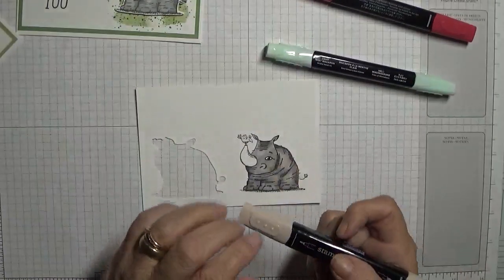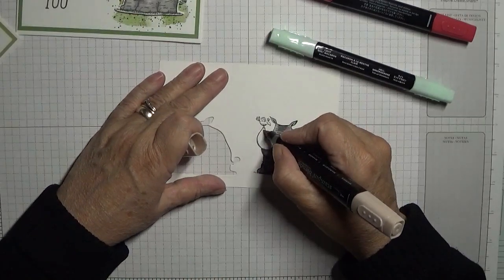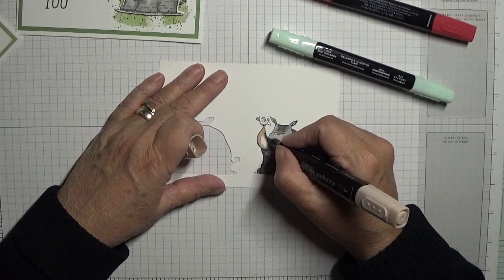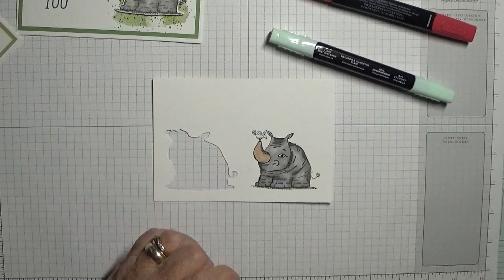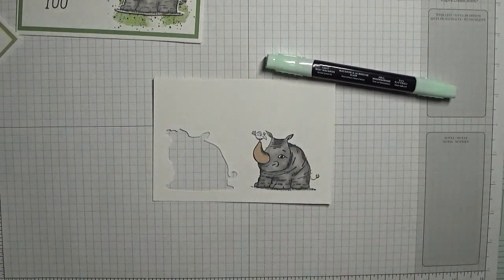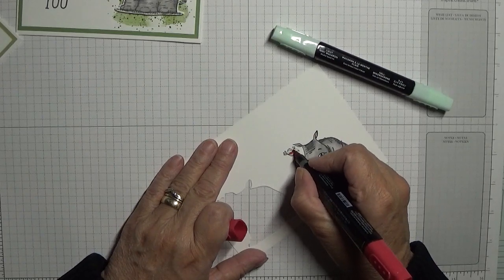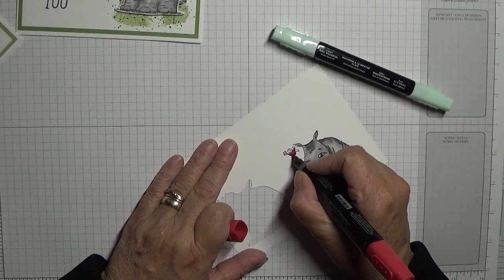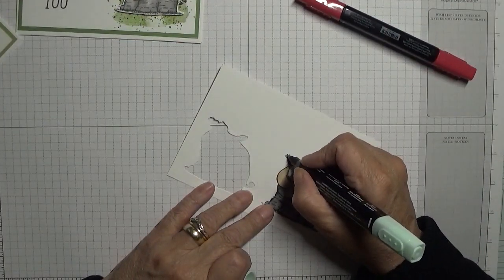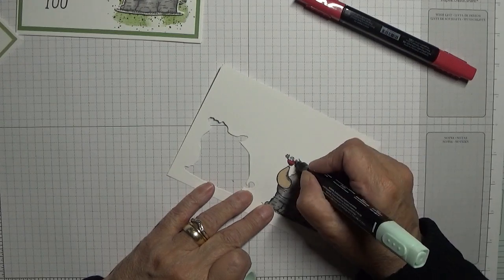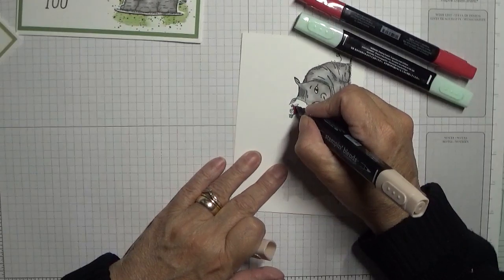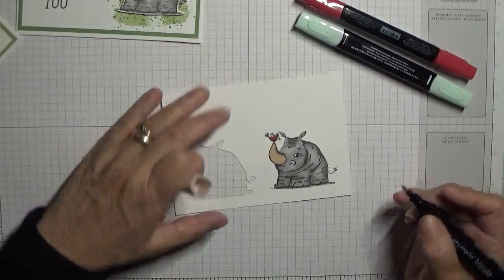For his tusk we're going to use ivory. For the bird we're going to use light cherry cobbler. We're going to give him a red body. And with light mint macaron we're just going to do his feathers in. And I will do his beak in ivory because I forgot to bring an orange out. That's alright.